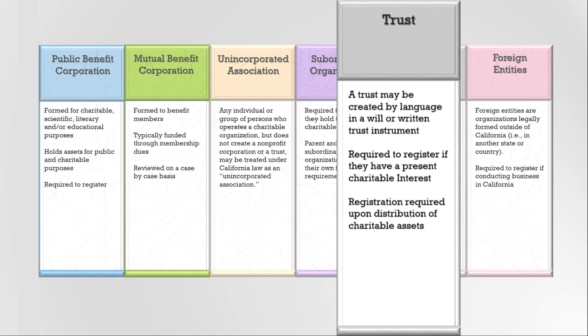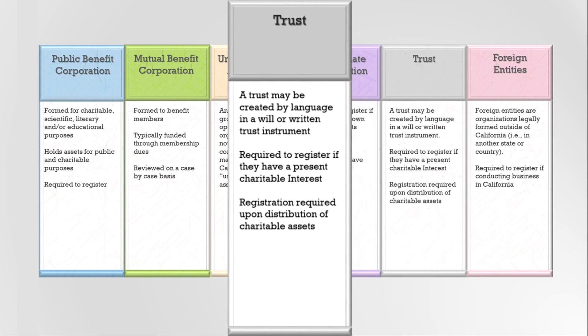A trust is an agreement to hold assets for the benefit of another. Charitable trusts are subject to the Attorney General's oversight and the trustees must register and file annual reports. A charitable trust is also created when a person raises or receives money or other assets for a charitable purpose — then the assets are held in a charitable trust, and the person responsible for the assets is a trustee.